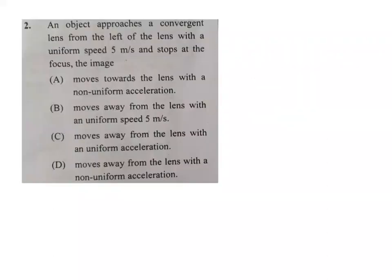Next problem: an object approaches a convergent lens from the left with a uniform speed of 5 meter per second and stops at the focus. This is a question from NCERT Exemplar. Using theory, the image should move away from the lens with non-uniform acceleration. Option D — moves away from the lens with non-uniform acceleration — is the right answer.